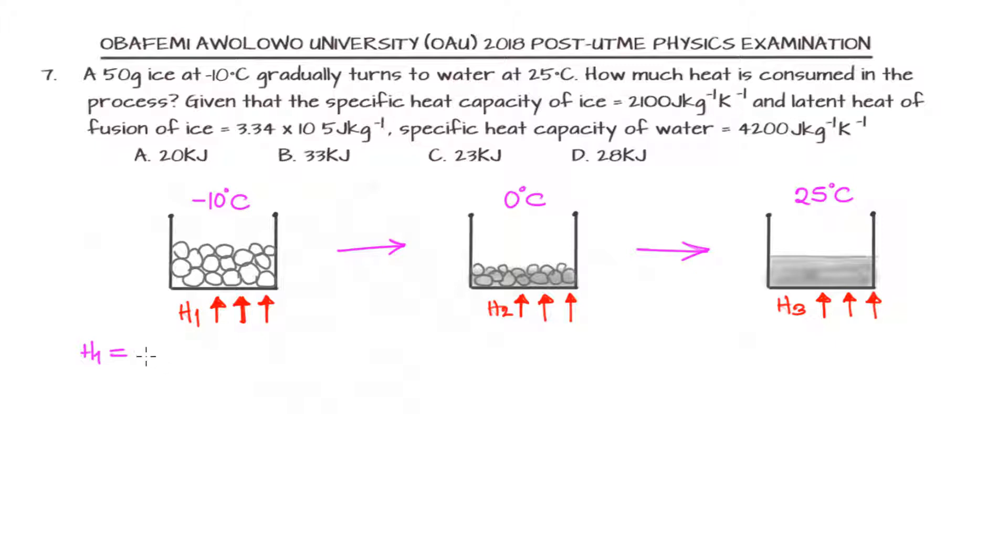If we apply heat for each of the stages, we can call that H1, H2, and H3. We have H1 to be the mass of the ice multiplied by the specific heat capacity of the ice multiplied by the change in temperature for the ice going from minus 10 degrees Celsius to 0 degrees Celsius.